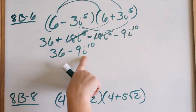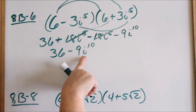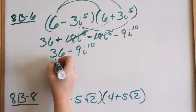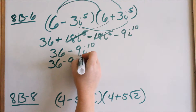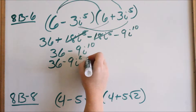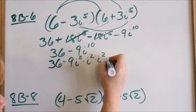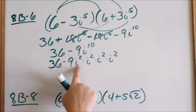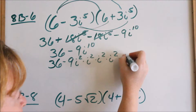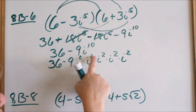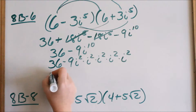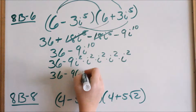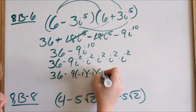This is where we will now substitute a negative 1 in for i squared. So basically, i to the 10th written longhand is i squared times i squared times i squared — that should be 5 of these, giving us 2, 4, 6, 8, 10. Because when you're multiplying, you add your exponents. So this would be like 36 minus 9 times negative 1, for 5 of these.